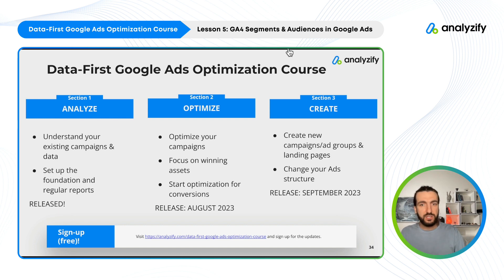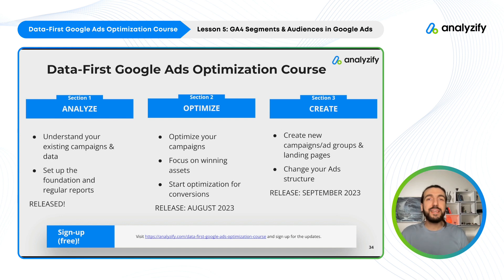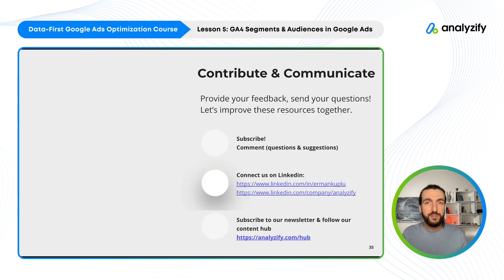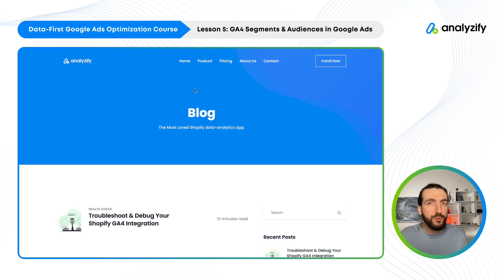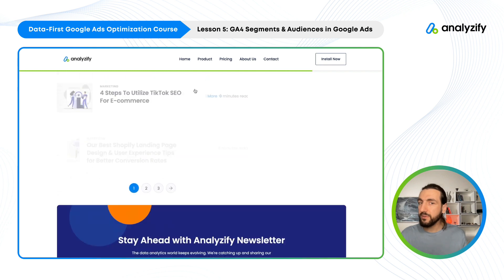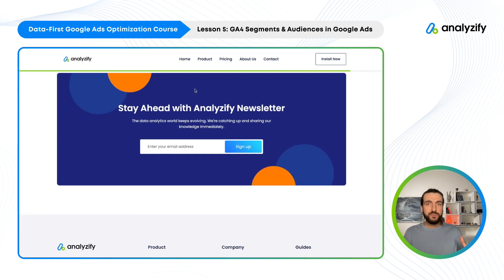In the next section of our course — the optimize section and the create section — we will talk more about how to use segments and audiences to optimize your campaigns and even to create new campaigns. We plan to release the second section in August and the third in September. Make sure to check our website and sign up for updates. Please leave your comments, subscribe to our channel, follow our pages on LinkedIn, and use our Information Hub for useful tips and tricks as blog posts. I hope this was useful — we are done with lesson five of our Google Ads optimization course. See you in the last and sixth lesson. Thank you.